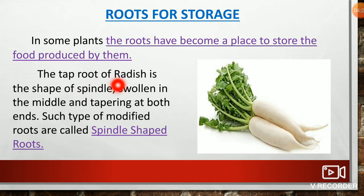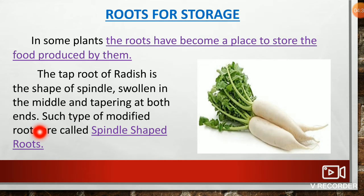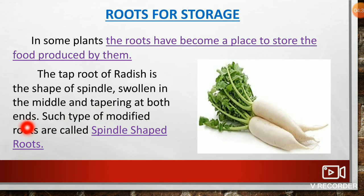For example, the tap root of radish is spindle-shaped — swollen in the middle and tapering at both ends. Such type of modified roots are called spindle-shaped roots.